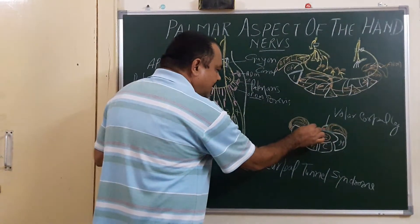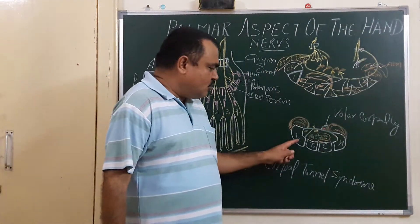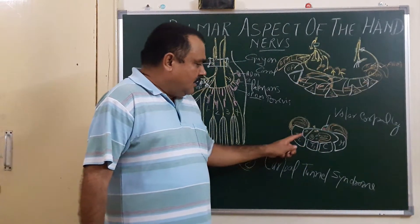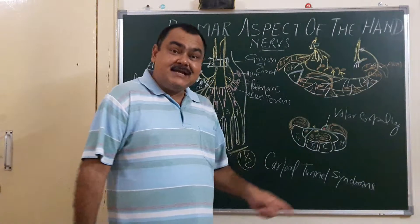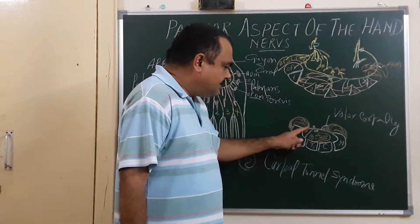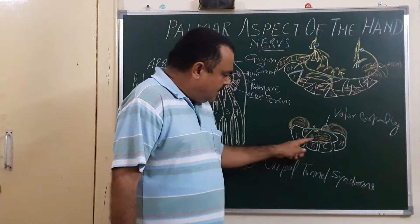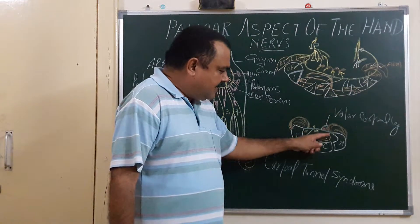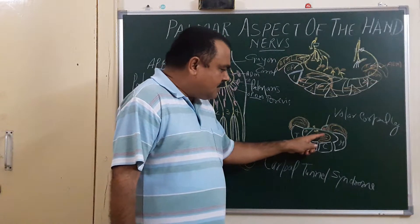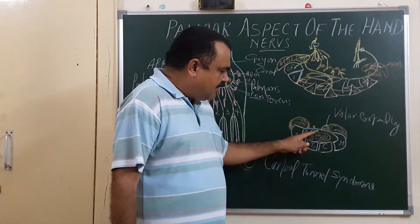The palmar cutaneous branch passes superficial to the flexor retinaculum. In cases of fracture dislocation of the carpal bones such as the trapezoid or capitate, or in cases of myxedema or pregnancy, the contents within this tunnel can become inflamed. Due to this inflammation, the median nerve becomes compressed.